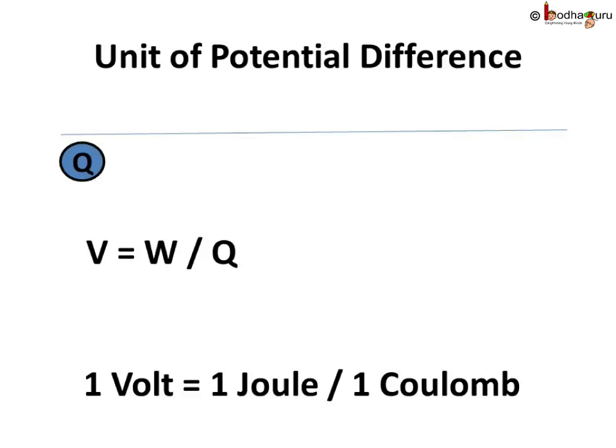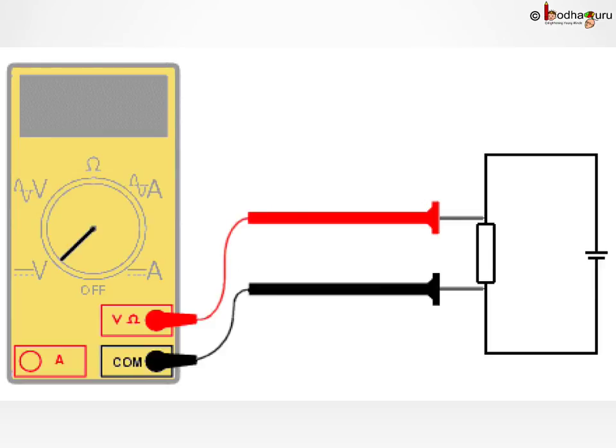And how do we measure the potential difference? It is measured using an instrument called voltmeter. Voltmeter is connected in parallel across the two points between which we need to measure the potential difference. Nowadays, a generic instrument called multimeter is also used that allow us to measure potential difference and other related parameters like electric current, resistance, etc.